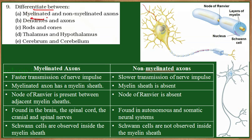We need to differentiate between myelinated and non-myelinated axons. In the picture we can see two neurons. The axon of one neuron is covered by the myelin sheet, which is secreted by the Schwann cells, while the axon of the other neuron is free of this myelin sheet. The first is called a myelinated axon and the second is called a non-myelinated axon.